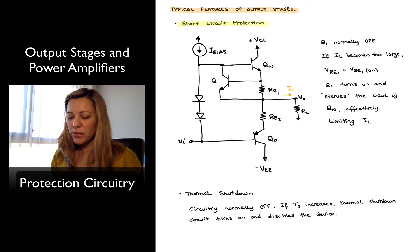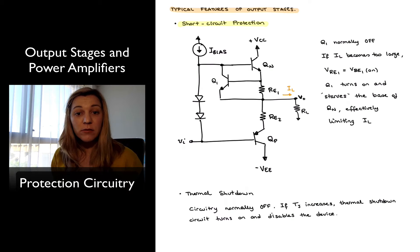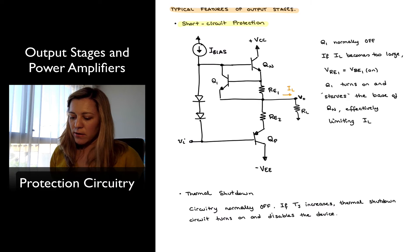And the way that operates is that normally Q1 is turned off for values of load current that are less than the maximum current that we want to protect the circuit from. If IL starts to increase.